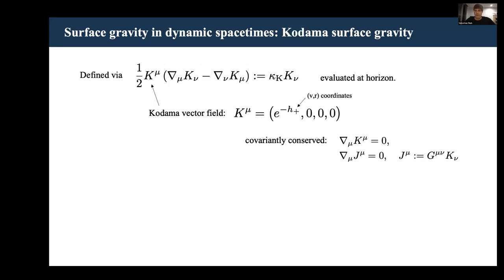The second stream of possible generalizations is based on Kodama surface gravity, which is defined via contractions of the Kodama vector field with its covariant derivatives. This is a vector field that's usually most conveniently expressed in VR coordinates, hence the plus on the H function here. It's covariantly conserved and actually gives rise to the conserved current J here as well.